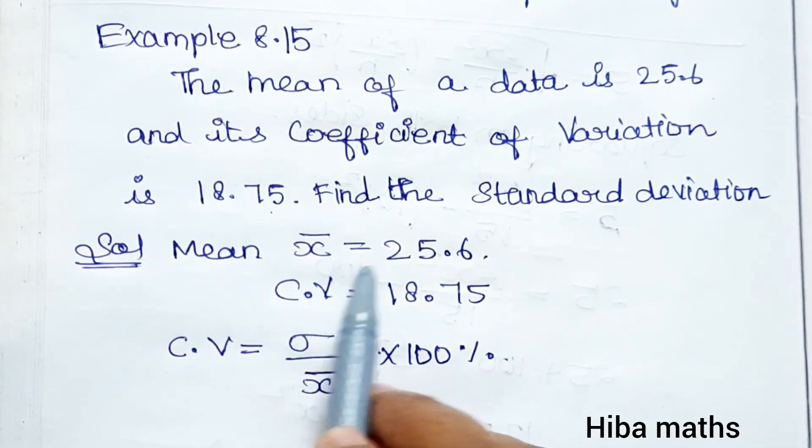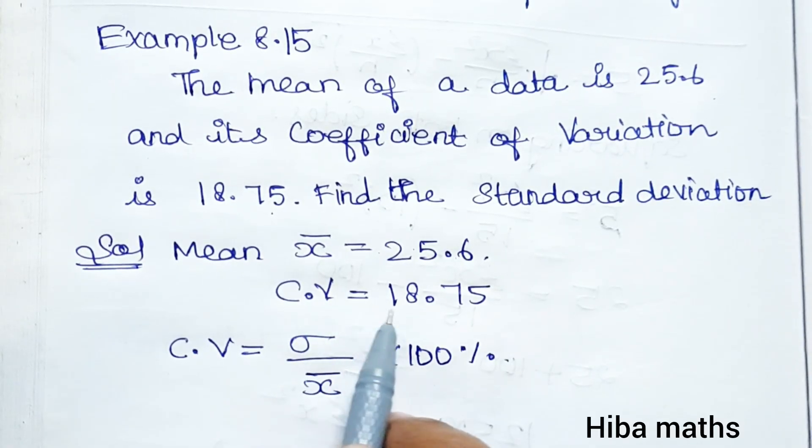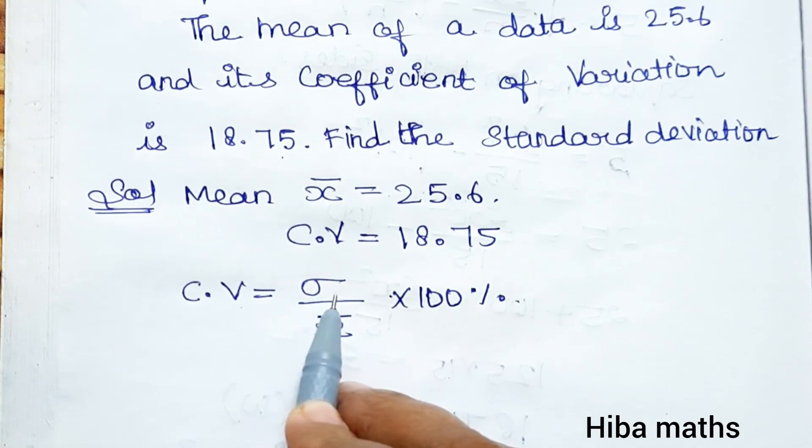So mean value is 25.6, coefficient of variation is 18.75. Now, with the coefficient of variance, we can solve the standard deviation.